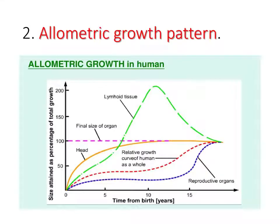We can use a graph to illustrate the allometric growth pattern in a human. The graph plots size attained by each organ as a percentage of total growth against time measured from birth in years. It shows growth curves for the head, lymphoid tissue, the human as a whole, and the reproductive organs, along with a line indicating the final size of each organ.